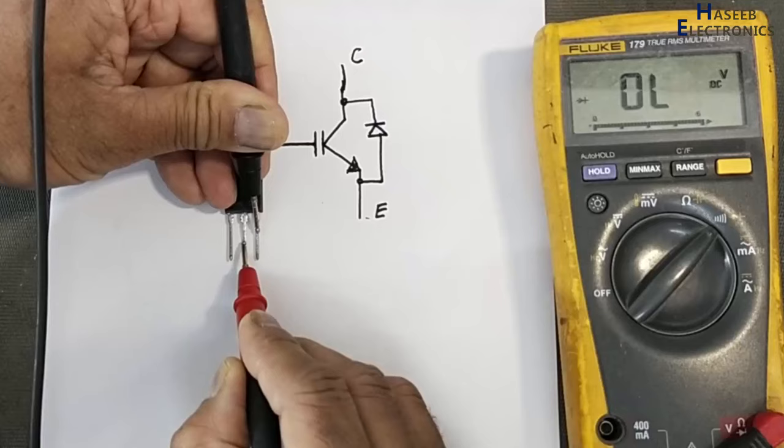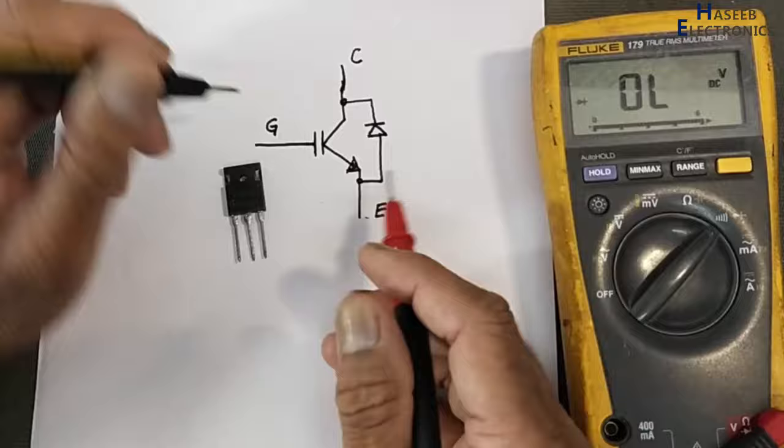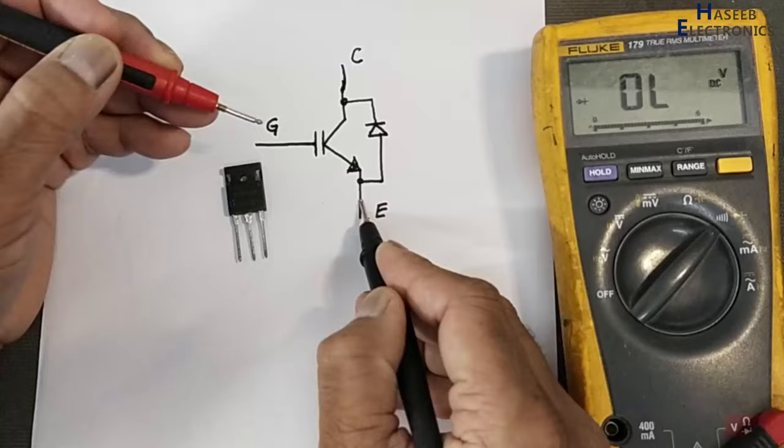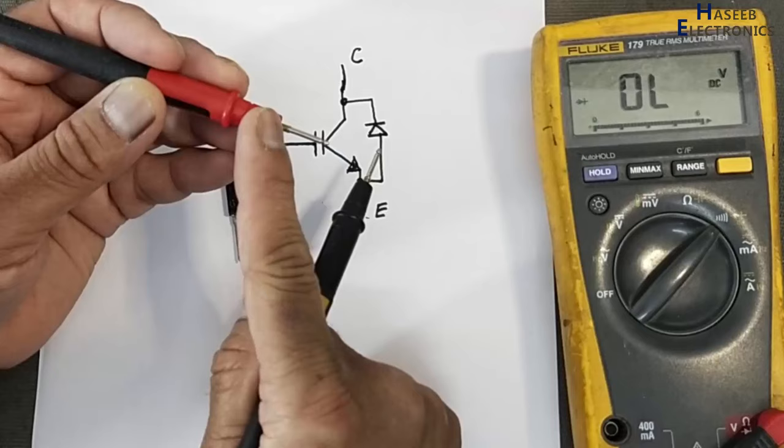Now, to turn on its channel, we need positive voltage. In digital multimeters, red lead is positive. In analog multimeter, the leads will change.